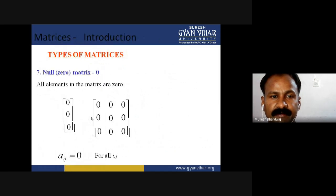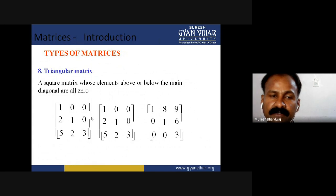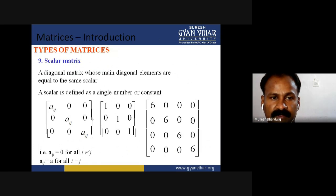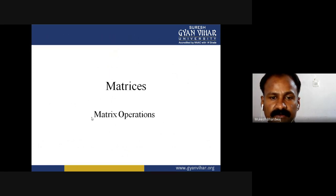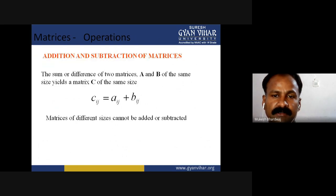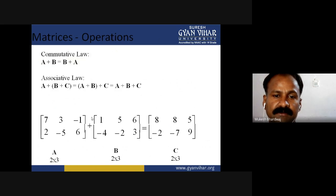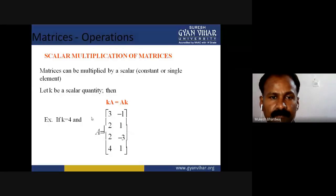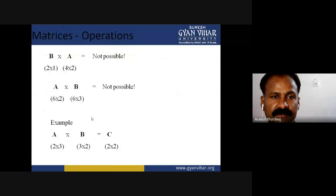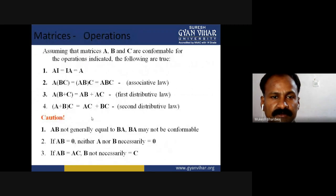The types of matrix — unit or identity matrix, null or zero matrix, triangular matrix — upper and lower triangular matrix, and scalar matrix — had been covered. We had already done matrix operations: equality of matrices, addition, subtraction of matrices, multiplication of matrix, and some laws related to multiplication of matrices.